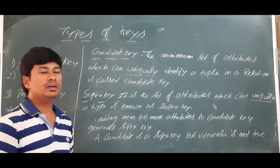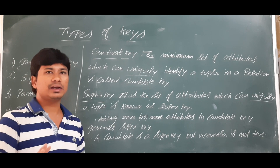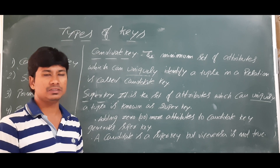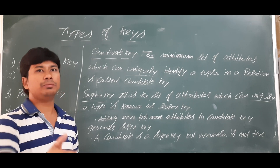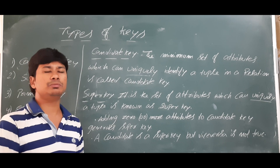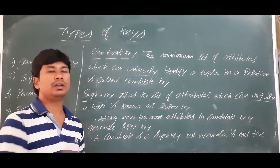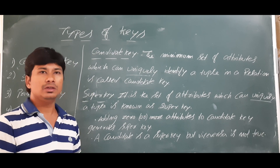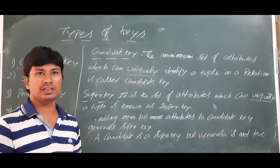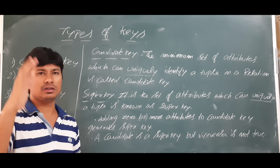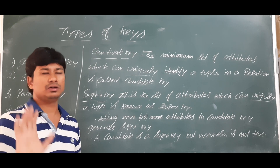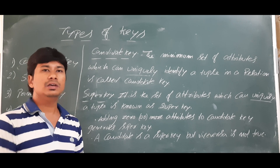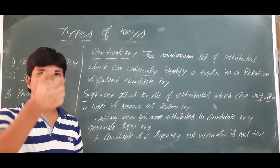Suppose we have a class. If I want to identify any person in the class, I have to either know their roll number or name. If I say 'Rakesh', more than one Rakesh may be possible, so I cannot uniquely identify a student by name. Similarly, if everyone wears the same uniform dress color, we cannot uniquely identify anyone that way either.